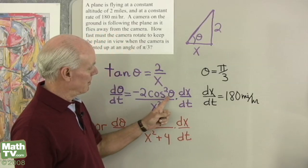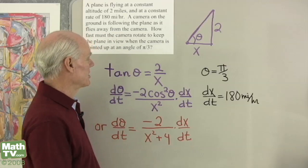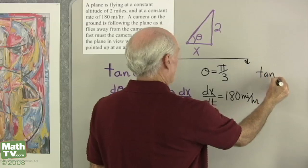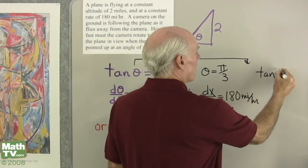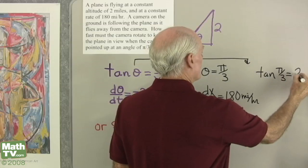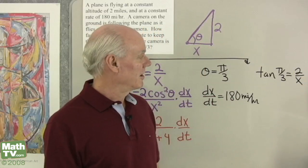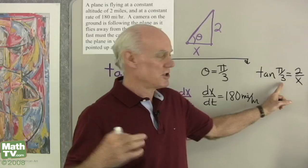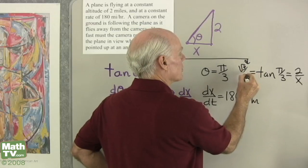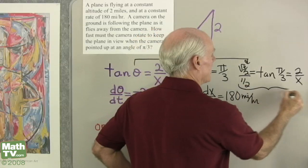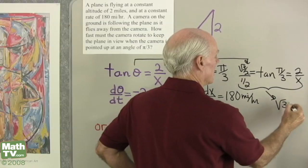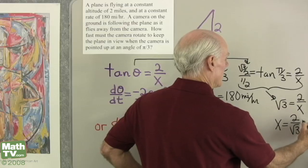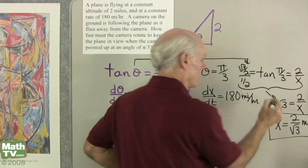I also need x, so I'll solve for it. Tangent of pi over 3 equals 2 over x. Thinking of pi over 3 as 60 degrees: tangent 60 is sine 60 over cosine 60, which is (√3/2) divided by (1/2) = √3. So √3 equals 2 over x, meaning x equals 2 over √3 miles.